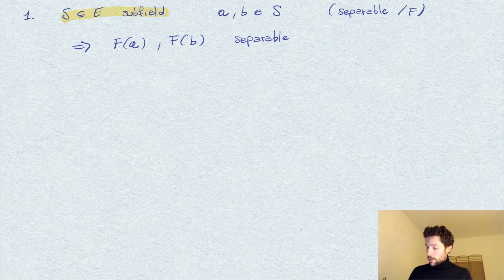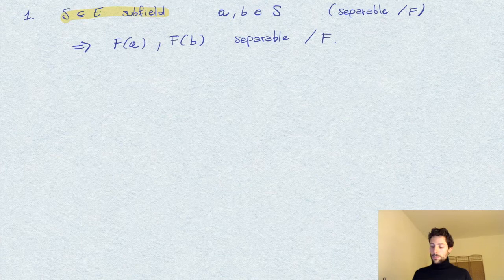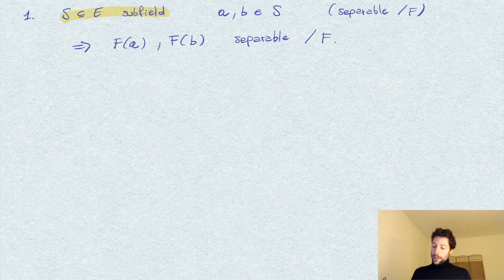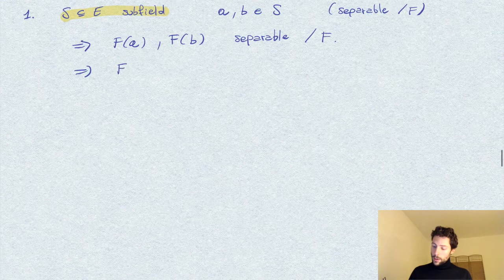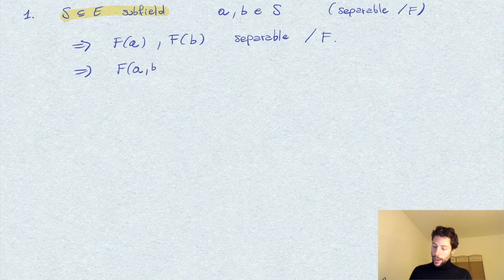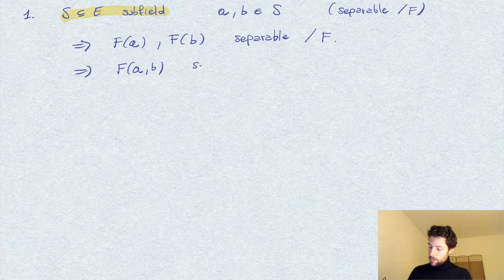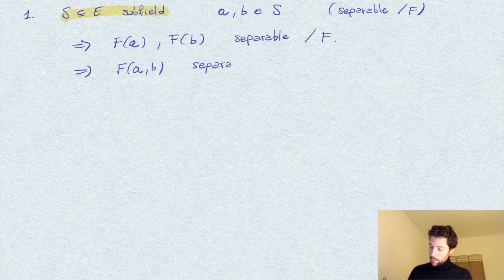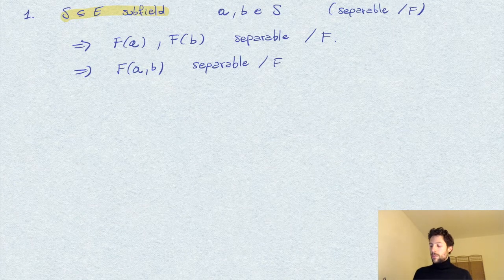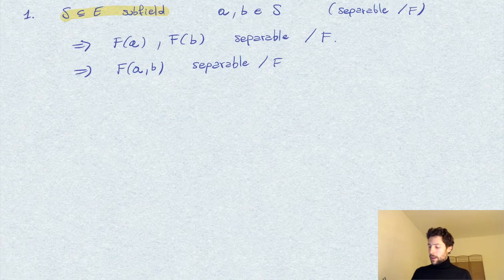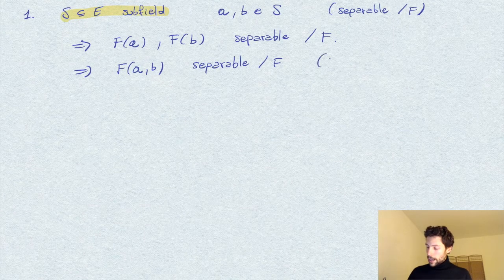So, in particular, the simple algebraic extensions by F of F by A and B are separable, because we take F and we extend it with a separable element. Or separable over F, of course. And from this, it is easy to show that F of A and B is separable over F.